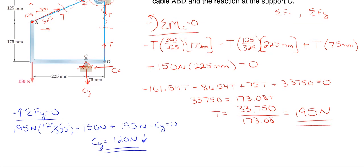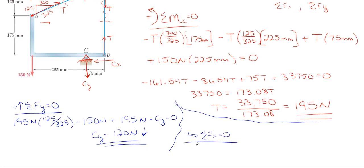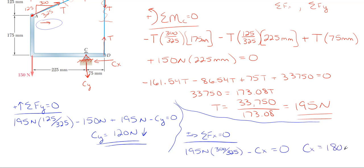One more reaction to find: C sub X. Taking to the right as positive and summing forces in the horizontal direction equals zero. We really only have two forces: the horizontal component of T, which is 195 Newtons times 300 over 325, minus C sub X since I assumed it's pointing to the left, equals zero. C sub X comes out to be 180 Newtons, and it came out positive, so my assumed arrow direction to the left is correct.